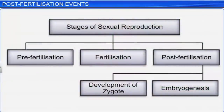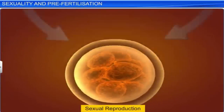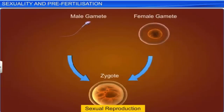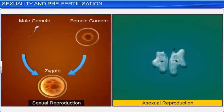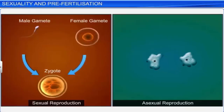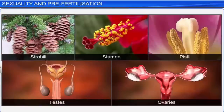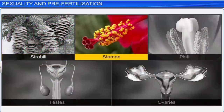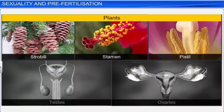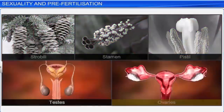Thus, in both plants and animals, the formation of a new life hinges on the development of a zygote and embryogenesis — the two post-fertilization events. Sexual reproduction, which is common in higher plants and animals, is a far more complicated and elaborate process than asexual reproduction. This form of reproduction essentially involves the fusion of male and female gametes, produced by reproductive structures such as the strobili, stamen, and pistil in plants, and testes and ovaries in animals.